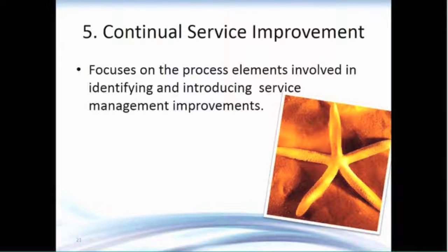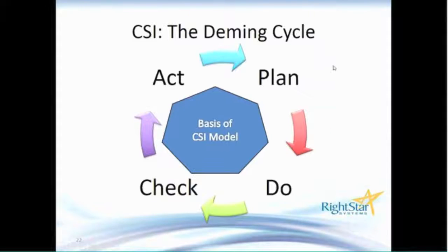Continual service improvement is the fifth phase of the lifecycle that surrounds the other phases. This focuses on introducing improvements for the various services that the team supports. The basis of the continual service improvement model is the Deming cycle — the idea that you plan, you do or implement, you check or report, and then take corrective action based on that to start the cycle all over again.